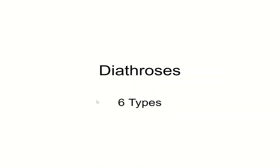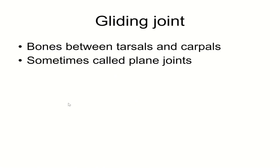Let's talk about the types of diarthroses — there are six types. First, gliding joints, also called plane joints, are what we see with the tarsals and the carpals. This is where the bones slide against each other along a mathematical plane where the two surfaces of the bone are sliding against each other.